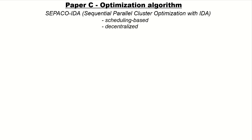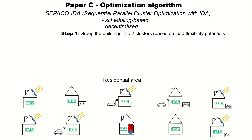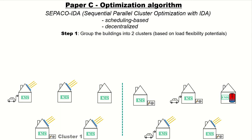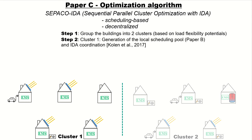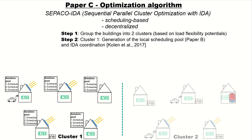The optimization algorithm of paper C is called CPICO IDA — a scheduling-based and decentralized optimization approach. In the first step, we group the buildings into two clusters: cluster 1 contains buildings with low load flexibility potential, and cluster 2 contains buildings with high load flexibility potential. In step 2, the buildings from cluster 1 generate a local scheduling pool based on the method described in paper B, and use the IDA coordination for schedule selection.